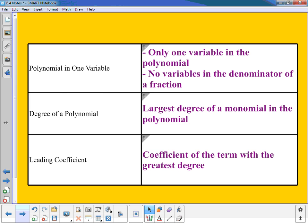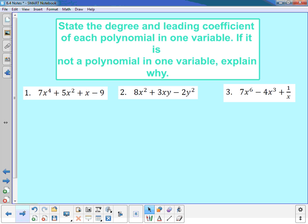So let's just practice finding these things. In number one, it says state the degree and the leading coefficient of each polynomial. If it's not a polynomial, explain why. So in number one, I want to look at my polynomial that I have there. I have 7x⁴ + 5x² + x - 9. I have only one variable, and I have no variables in the denominator. So it is a polynomial in one variable here.